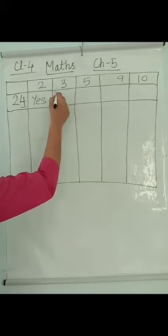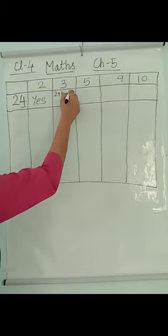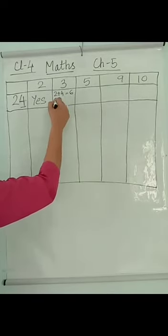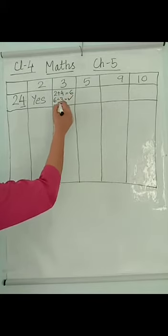For 3, you have to first add. 2 plus 4, answer will be 6. Yes, 6 comes in the table of 3. 6 is divisible. Yes.